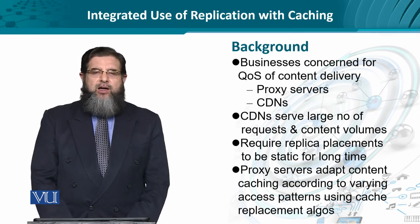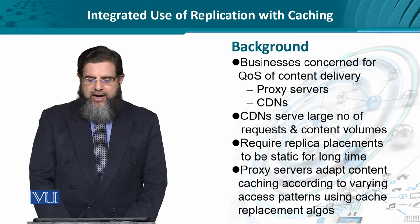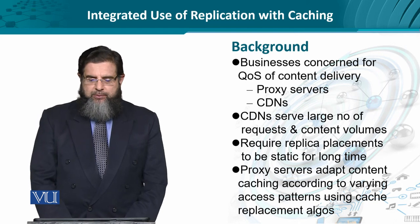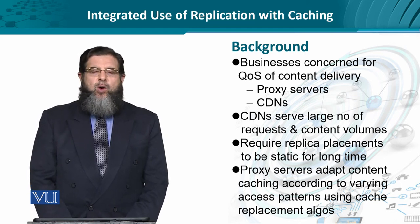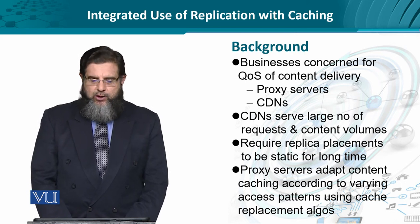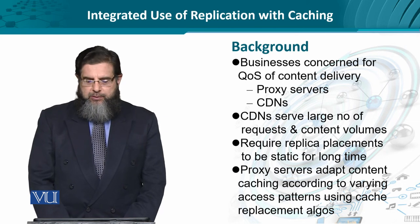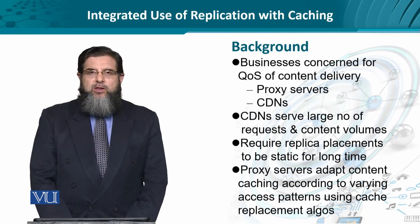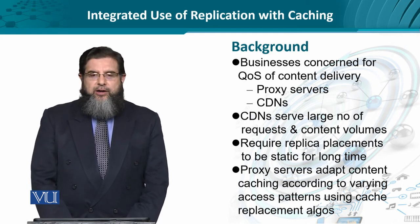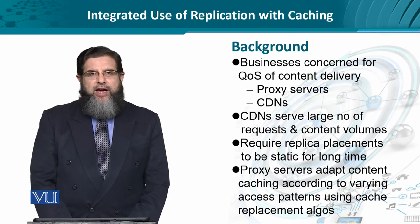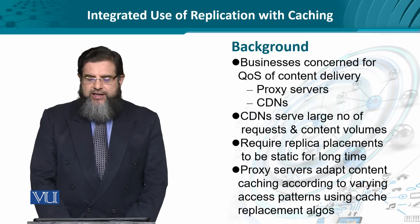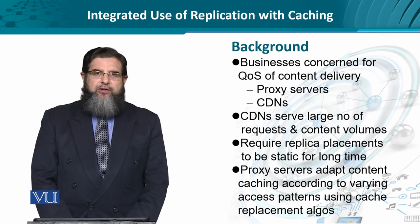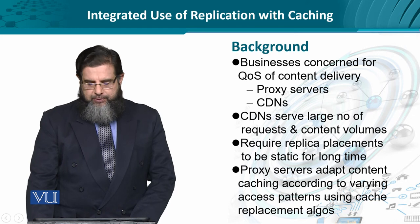CDN, as the main focus area, largely provides a dedicated server for handling a large number of user requests and content of multiple types. This requires the replication of content — known as replicas — across multiple locations for a fairly long period of time. Proxy servers, on the contrary, are used for adapting the caching of content as a transient phenomenon, and this changes according to the usage pattern and the cache replacement algorithms.